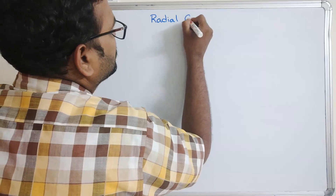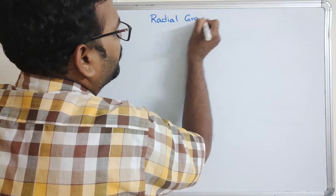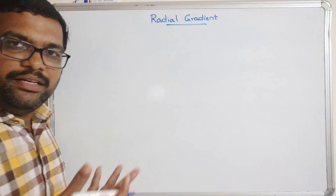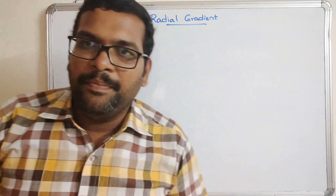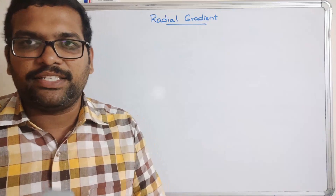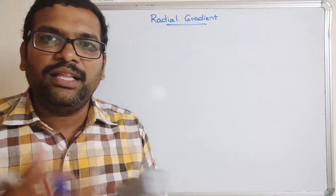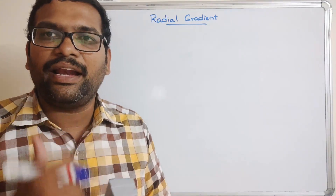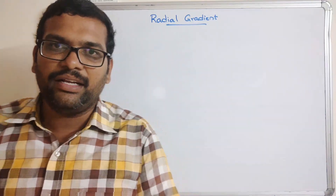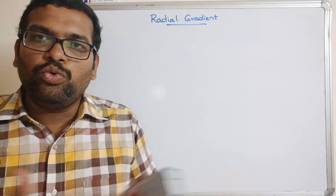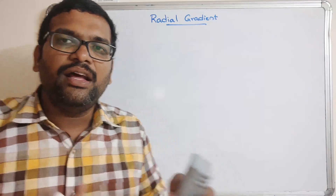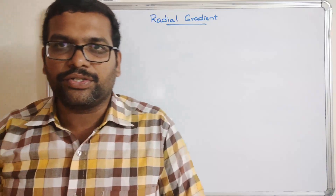In our previous session, we discussed about gradient introduction. Gradient means applying multiple colors with smooth transitions. We saw three categories: Linear, Radial, and Conic. We discussed Linear Gradients and also two functions — the Linear Gradient function and the Repeating Linear Gradient function.